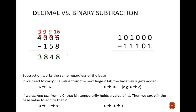This procedure works the same in any base. The only difference is the value of the carry. In decimal, the carry has a value of 10. In binary, the carry is weighted as 2. In hexadecimal, the carry would be a 16, and so on.